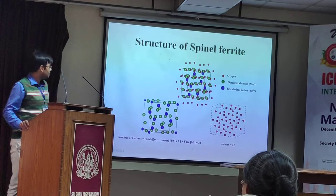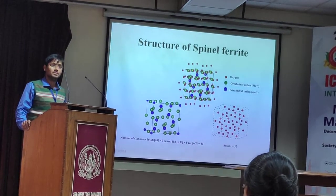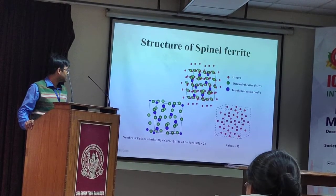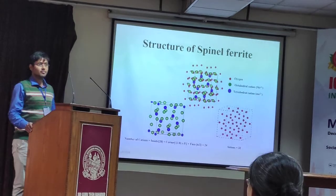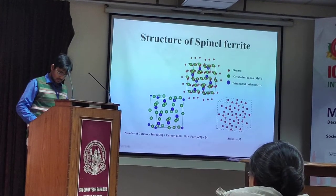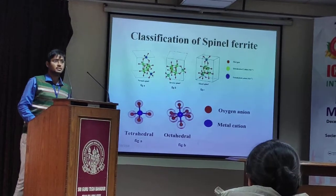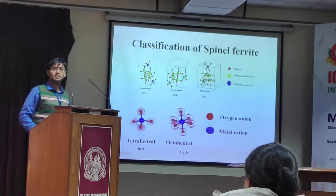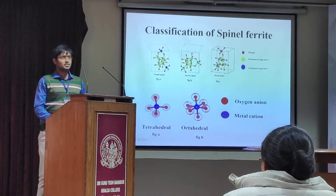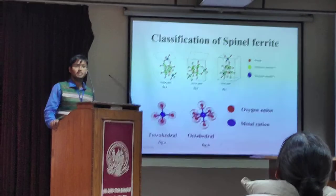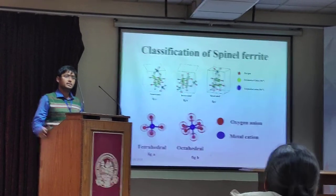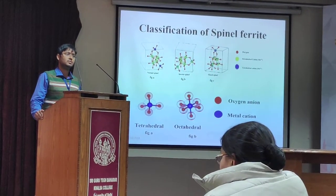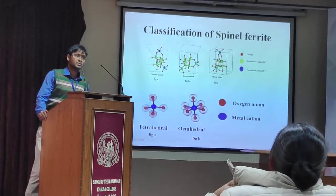This is the structure of spinel ferrite. Out of 56 atoms, there are 32 anions, 8 divalent cations, and 16 trivalent cations, arranged in an FCC structure. The classifications of spinel ferrite are: normal, mixed, and partially filled spinel ferrite. The distribution of divalent and trivalent cations at their respective positions plays an important role in the magnetic, electric, and structural properties.